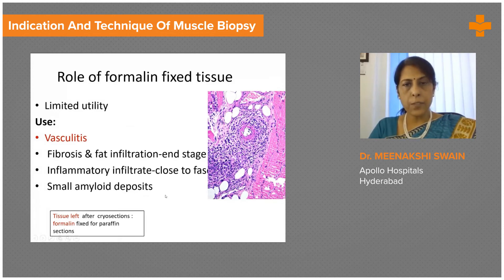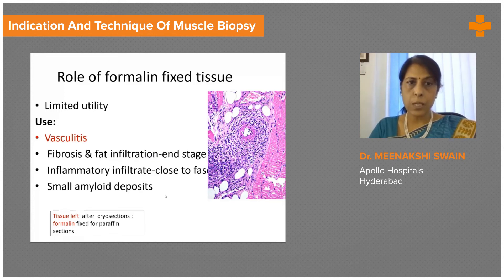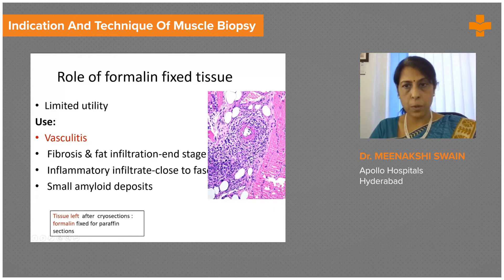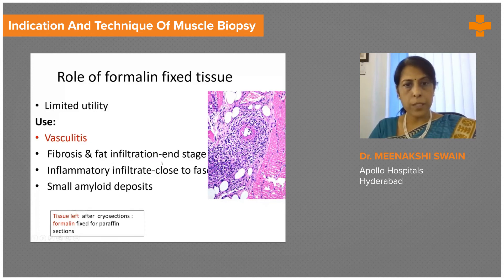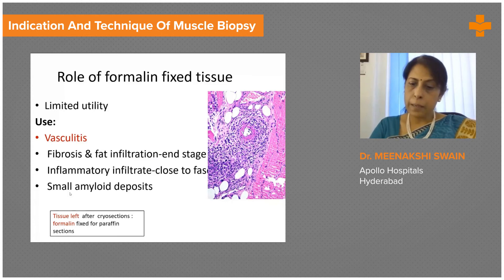The important question is: does formalin-fixed tissue yield any results for diagnosis of muscle diseases? No — it has very limited use because it denatures all the enzymes we need to study in detail to arrive at the right diagnosis. The only uses are: vasculitis can be confidently diagnosed on formalin-fixed tissue showing fibrinoid necrosis and dense perimysial inflammation; fibrosis and fat infiltration in end-stage muscle can be identified in paraffin sections; and small amyloid deposits that might be missed on cryosections are better picked up in formalin-fixed tissue. Overall, a good cryosection with enzyme stains is what one needs to make the right diagnosis.